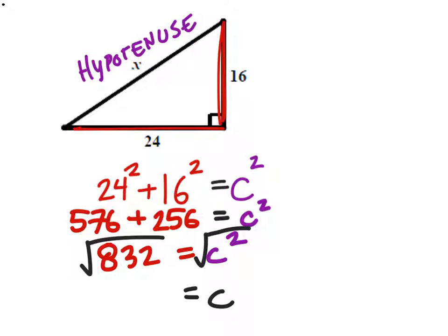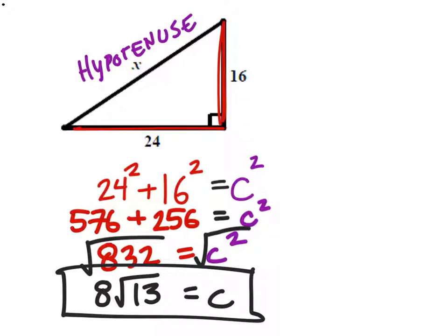In my calculator, I can do that. 8 times the square root of 13. You will have to simplify these on the test, just like we did in the previous unit.